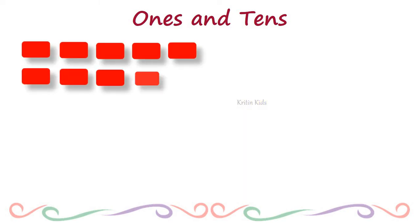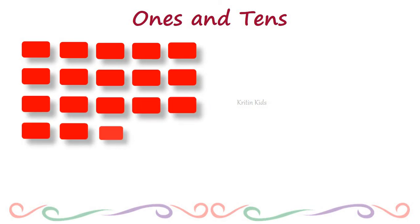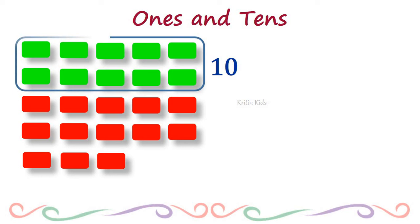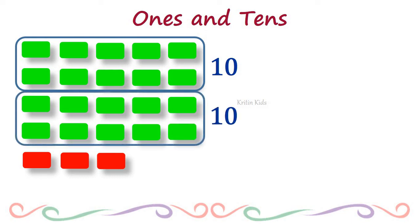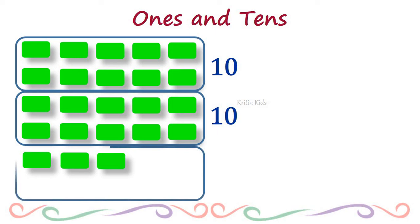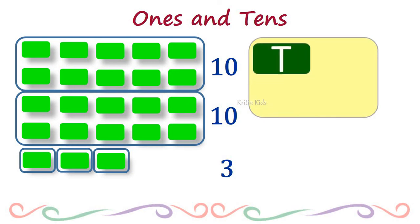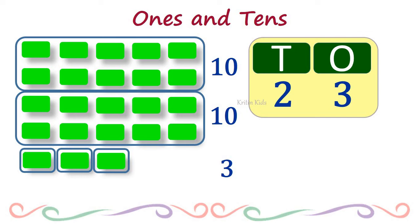Let's go for one more example. Count: 1, 2, 3, 4, 5, 6, 7, 8, 9, 10 — here goes our first 10s block — then 1, 2, 3, 4, 5, 6, 7, 8, 9, 10 — this is our second 10s block. The remaining blocks we cannot put in a 10s block, so we use 1s blocks: 1, 2, and 3. At the 10s position we have 2 blocks, at the 1s position we have 3 blocks. The number is 23.